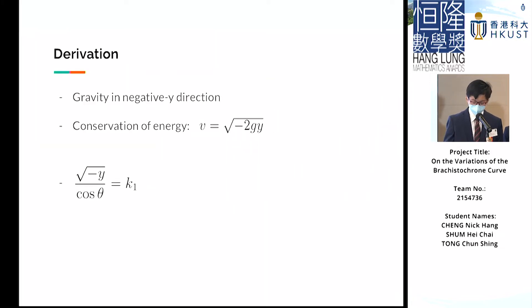We assume that the starting point is on y = 0, and that gravity points in the negative y direction. By the conservation of energy, v = √(-2gy), where g is the gravitational field strength assumed to be constant. Hence, the square root of negative y over the cosine of the angle of inclination is a constant k1.